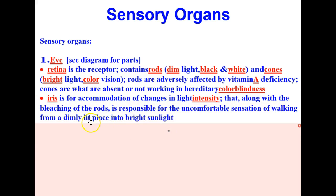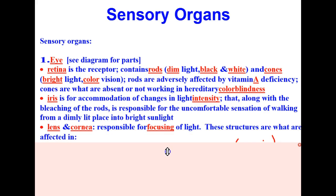The iris is for accommodation of changes in light intensity. That, along with the bleaching of the rods, is responsible for the uncomfortable sensation of walking from a dimly lit place into bright sunlight. The lens and cornea are responsible for focusing of light. These structures are what are affected in the following disorders.